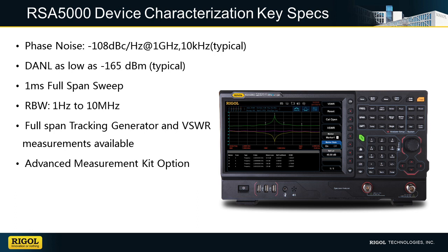In sweeping mode, the RSA5000 provides typical performance usually reserved for the highest performing instruments, including 1 Hz RBW, displayed average noise level as low as -165 dBm, and phase noise as low as -108 dBc per hertz.